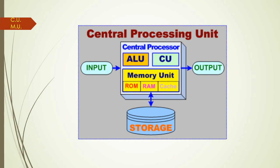The second part is the Memory Unit (MU). The memory or storage section of the computer consists of devices used to store data and information during computation. The MU provides the computer a place to store data and to perform arithmetic and logical operations on that data.